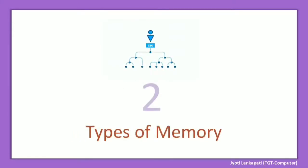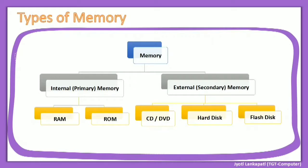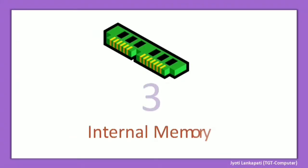Now let's move ahead with the two types of memory. There are basically two types: internal memory and external memory. Internal memory is also known as primary memory, and external memory is also known as secondary memory. Internal memory is divided into two parts — RAM and ROM — while external memory includes CD, DVD, hard disk, and flash disk.